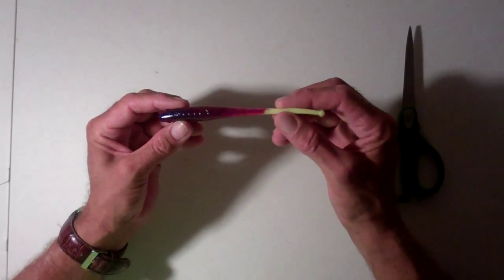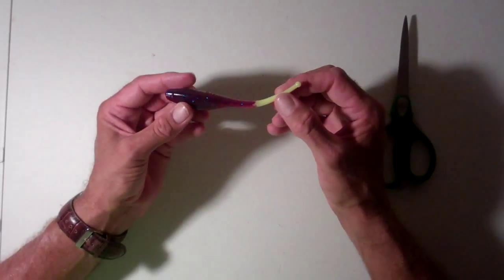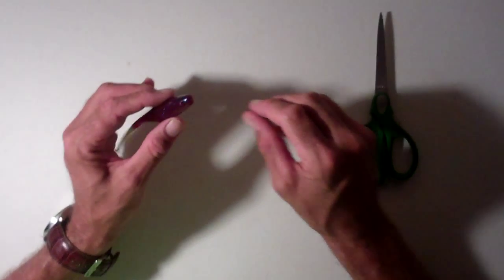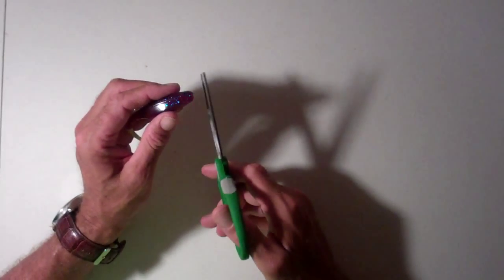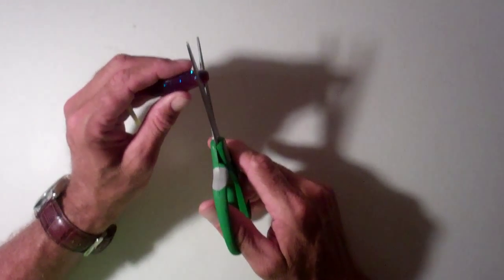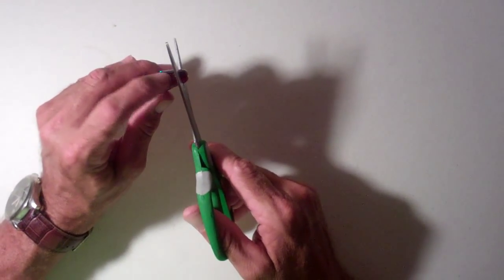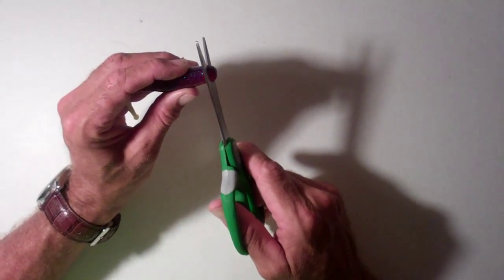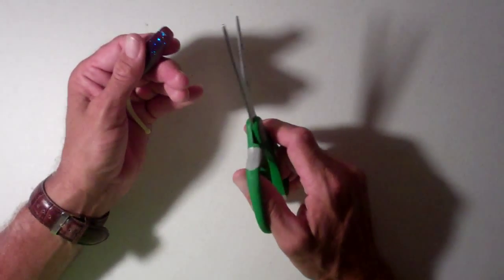What we have here is a Kelly Wiggler Ball Tail. With this particular plastic, you're going to want to trim about a quarter inch off right in front of the eyeballs of the mold. Trim that off and square it up.